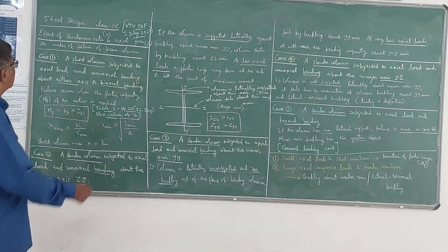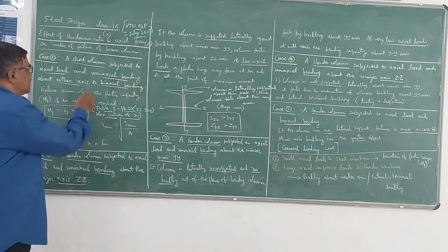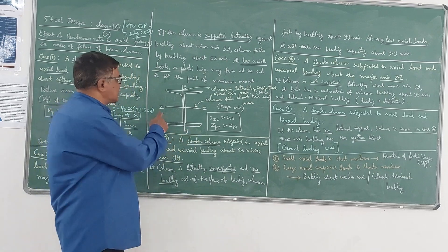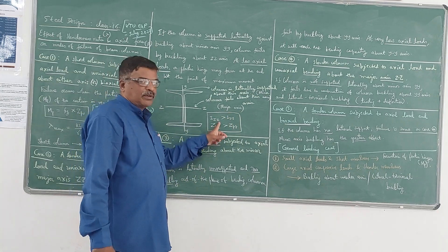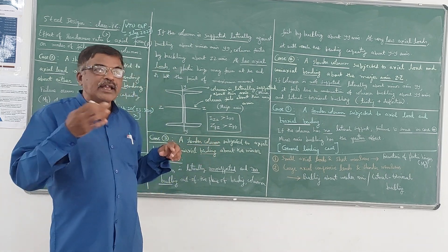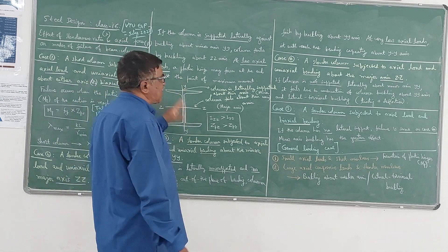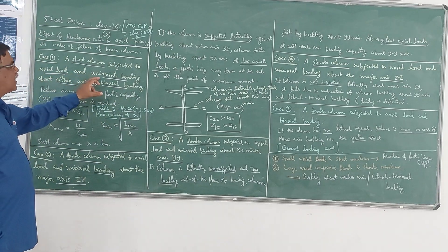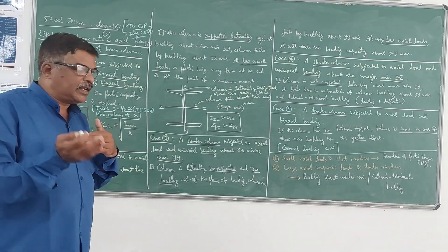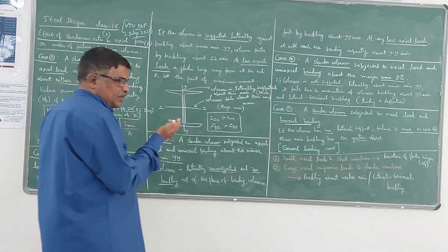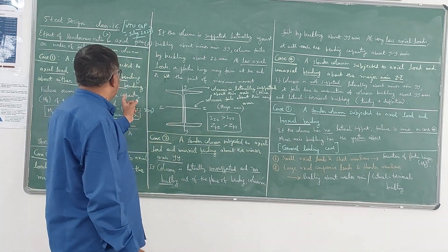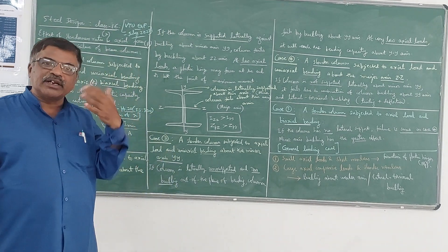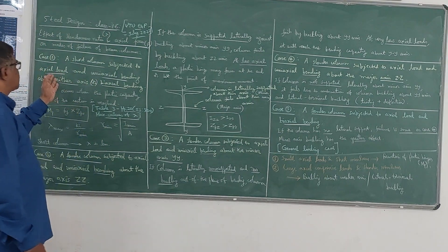The first case is a short column subjected to axial load and uniaxial bending about either axis — whether it is the Z-axis or Y-axis. For an I-section, the Z-axis is the major axis because the moment of inertia and section modulus are higher about ZZ compared to YY. Uniaxial bending means a moment in one direction; biaxial bending means significant moments about both axes — My and Mz — are present.